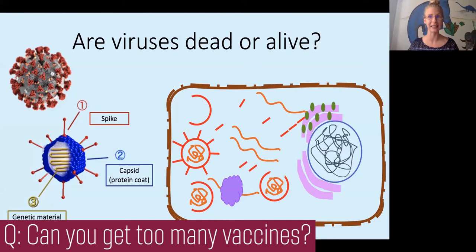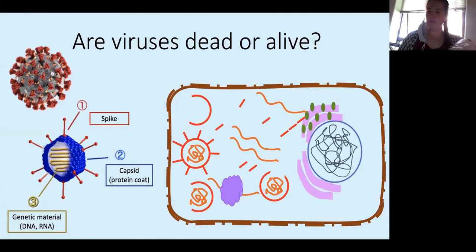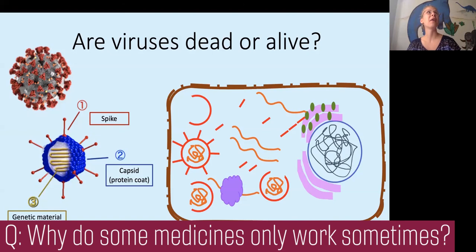Then how come - so we understand how vaccines work because you just told us about that - but like, how come things like Tamiflu you can only take within a certain period of time before we get the flu and not any time when you have the flu? So why do only some medicines work sometimes? When a virus infects you - and I can't speak to the specifics of Tamiflu - but in general, some viruses go into an incubation period.